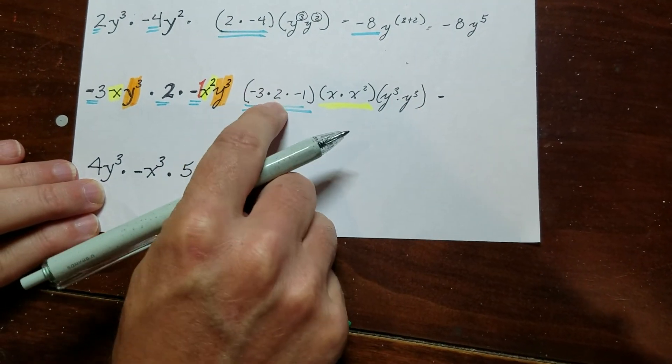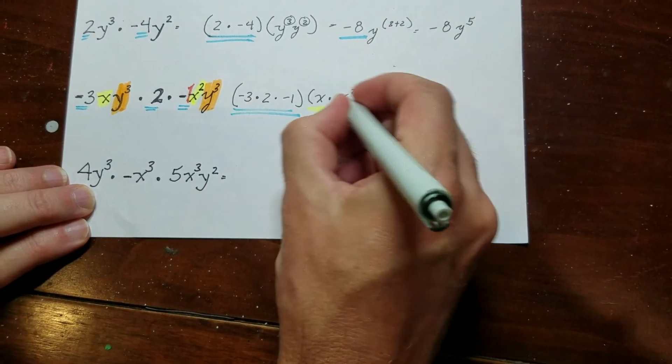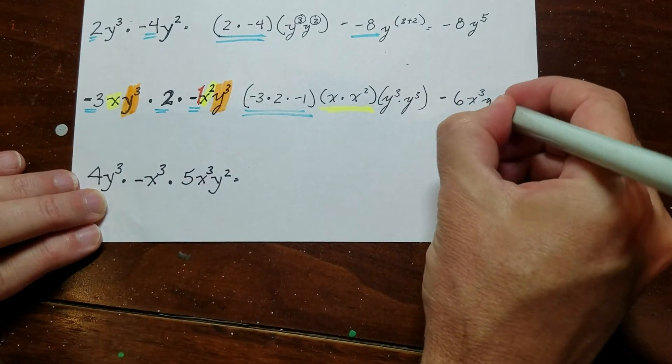And then I'm going to do negative 3 times 2, negative 6. Negative 6 times negative 1 is positive 6. There's three x's here. And there's six of those y's.